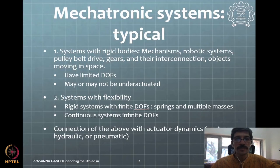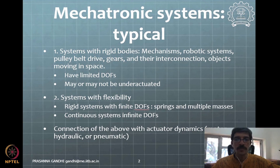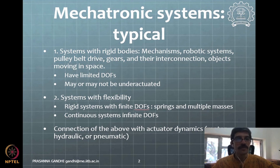Typical systems encountered in mechatronics are rigid body systems or systems with flexibility. Rigid body systems may have single or multiple rigid bodies and single or multiple degrees of freedom. Examples include mechanisms, robotic systems, belt-pulley drives, and so on. They typically have a limited number of degrees of freedom. For example, a four-bar mechanism has four links but only one degree of freedom, because the links are constrained to move in a certain fashion — as we have seen in previous kinematics courses.